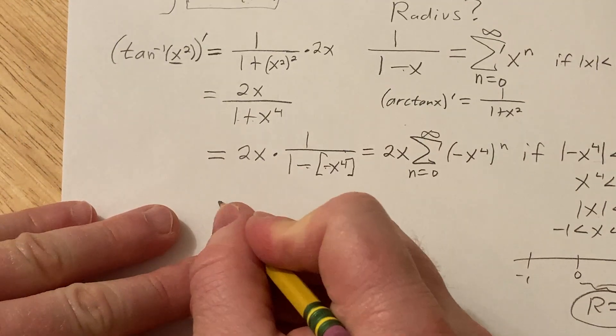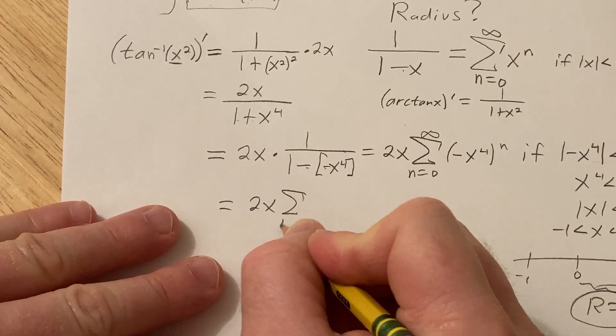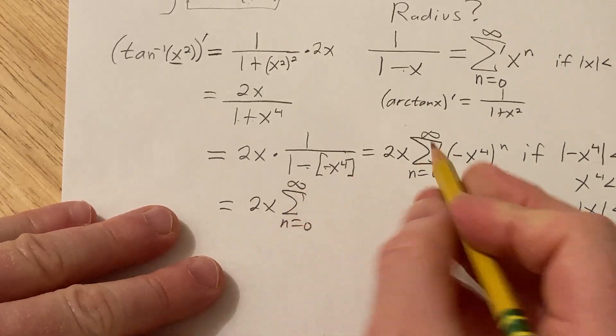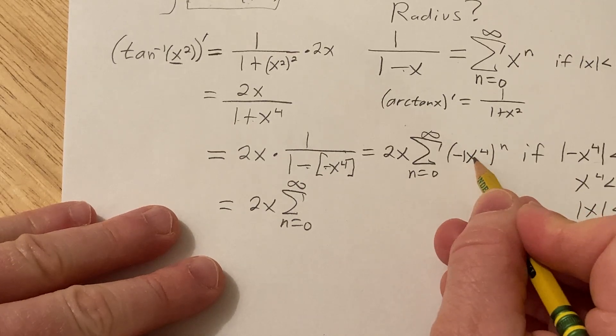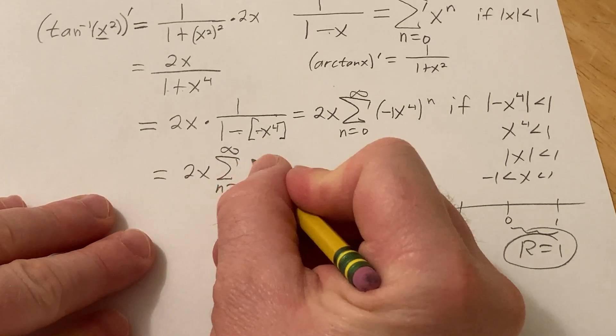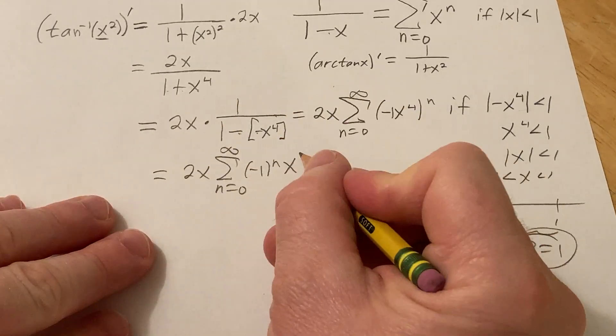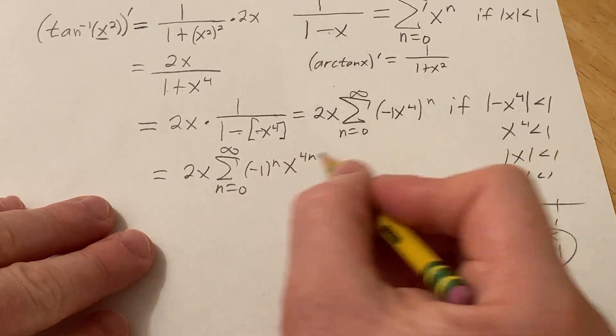Let's keep going. This equals 2x times the infinite sum from 0 to infinity. There's really a negative 1 here so we can break this up using properties of exponents as negative 1 to the n times x to the 4n, right, n times 4 is 4n.